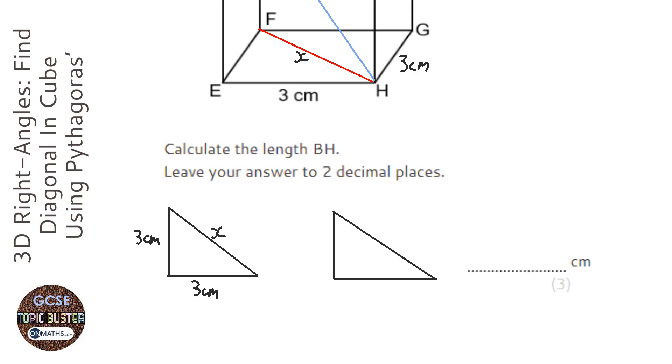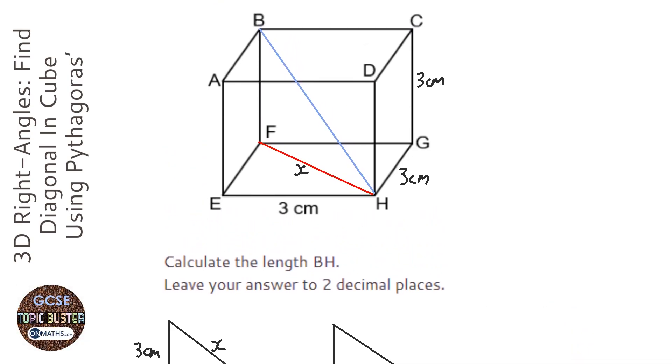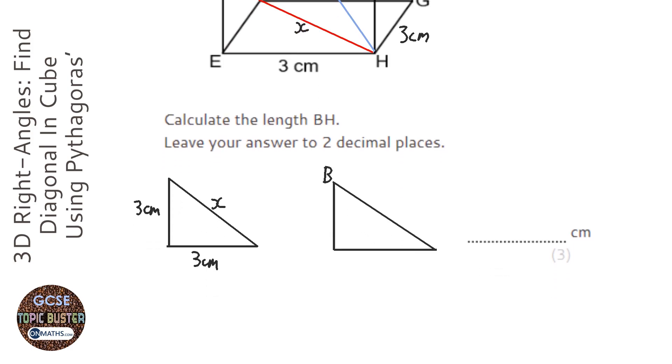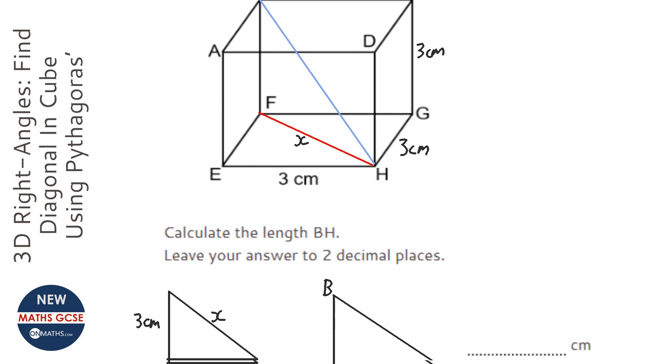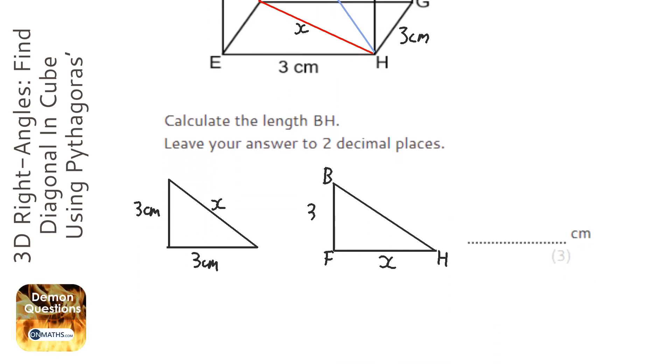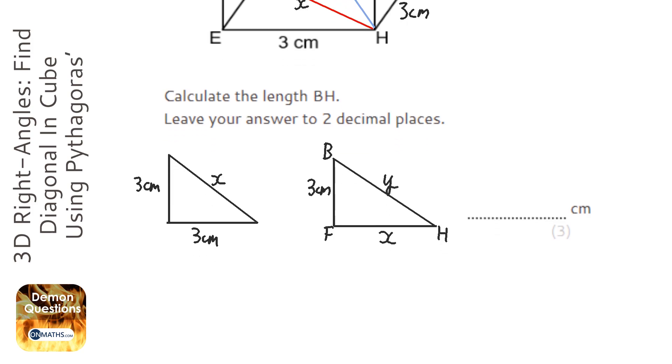Okay, and then we're going to use that one to work out the length asked in the question, just BH. So having a look, what's that top one? BFH. Now FH is X, we've called it, and then BF we know is 3 cm. Again, it's a cube, and let's call that BH, let's call it Y, just to make things a bit easier.